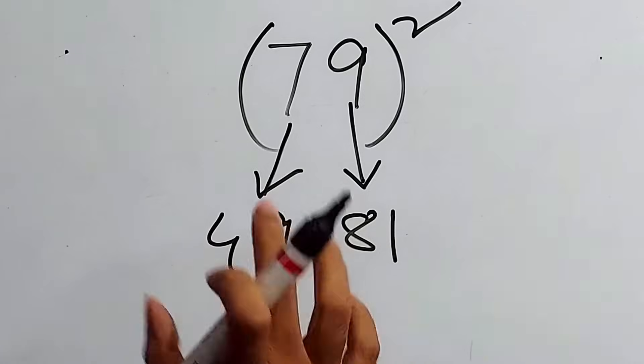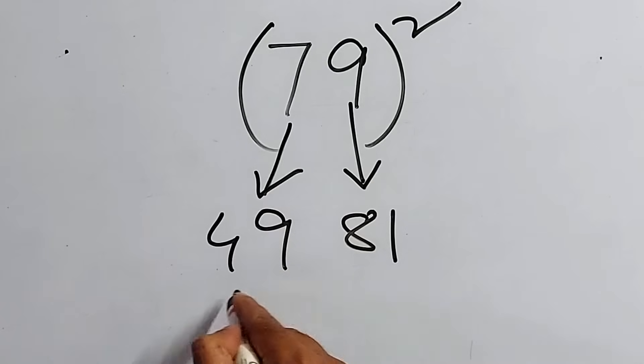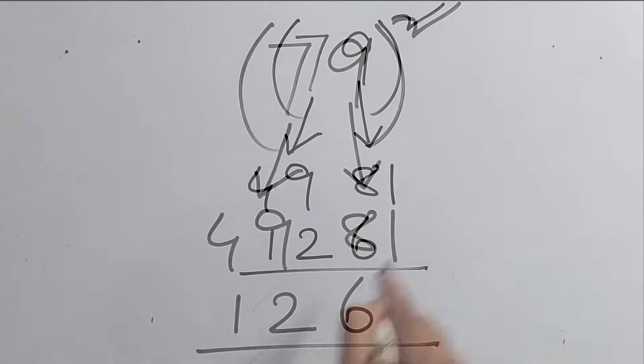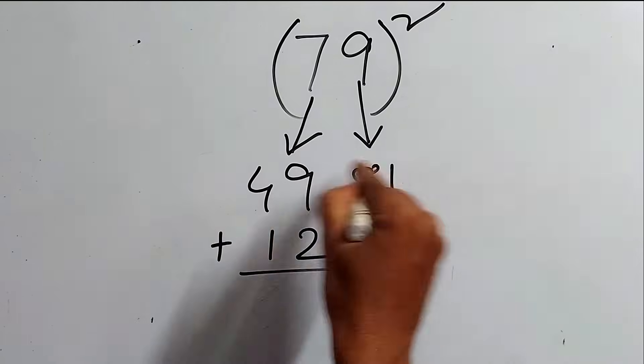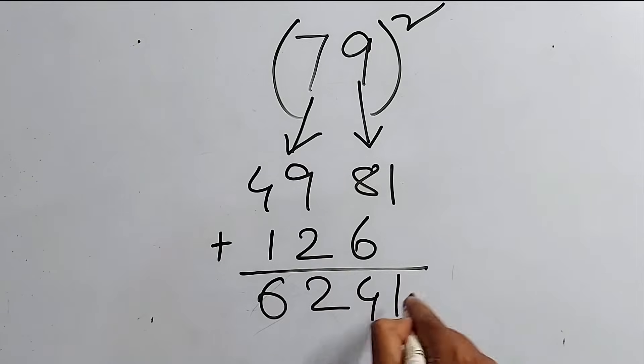Now, 126 is a 3-digit number. Again, I'll say that one. Just leaving one place, it will be 1, 2, 6. And now, if we add this 2 lines, we'll get 6, 2, 4, 1. That's it. Isn't it simple? Let's try one more number.